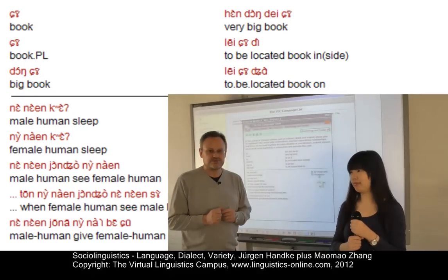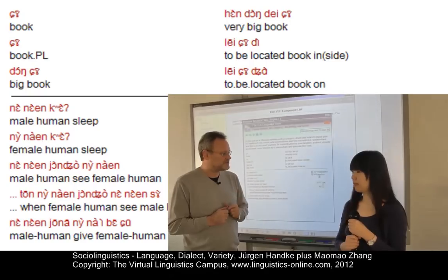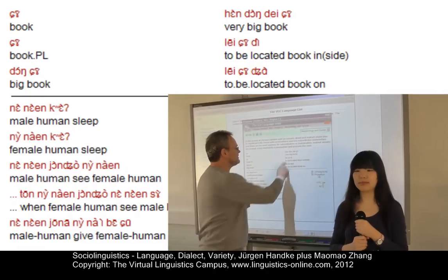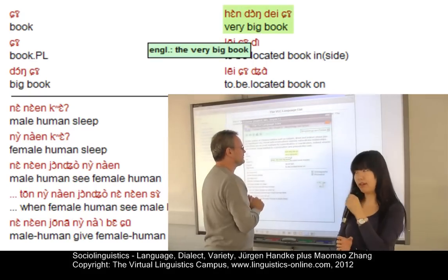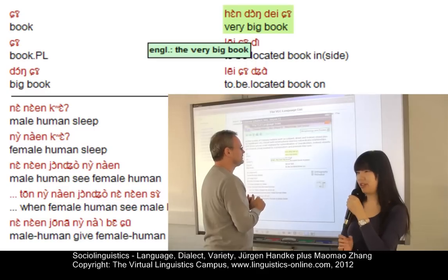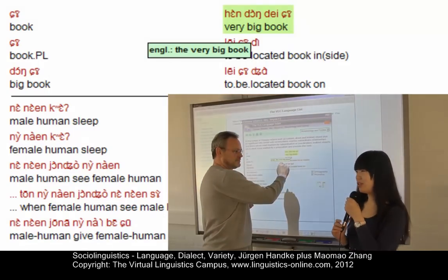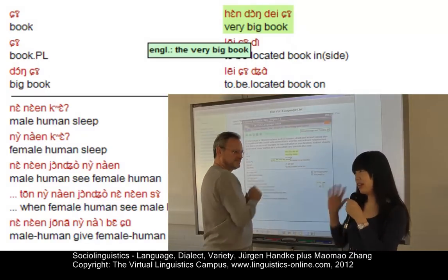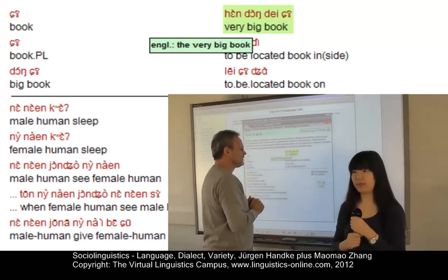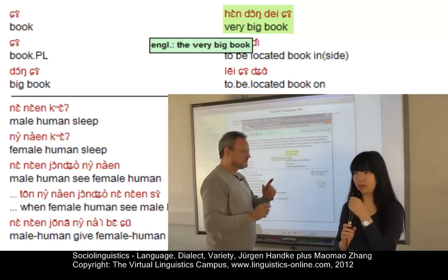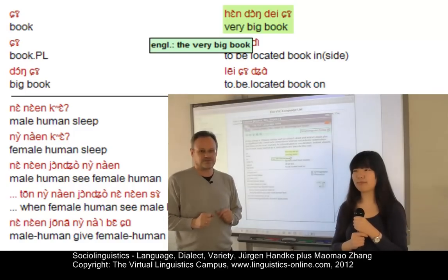Here's the first variety of Chinese. Let's find out whether you understand what the speaker says. [Mao Mao responds:] Yes, I can understand. It's not totally different, but I can understand. Thank you. Now we will look at a different variety of Chinese, and again we want your reaction.